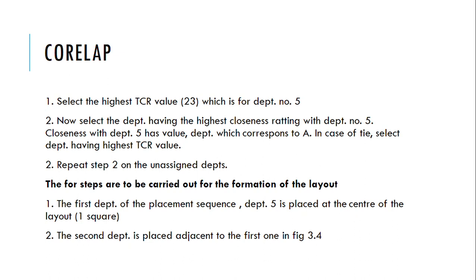After calculating the TCR, we select the highest TCR value, which belongs to department number 5. Then we select the department having the highest closeness rating with department 5, specifically those with an 'A' rating, and in case of a tie, select the department with the highest TCR value. We repeat this step on the unassigned departments.